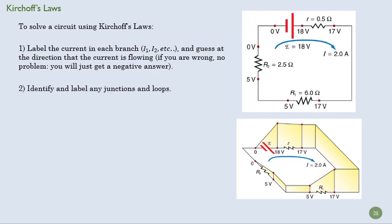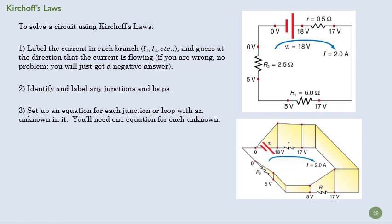You label the current branch. You identify and label any junctions and loops. And then you set up an equation for each junction and each loop with a known in it. Your goal is to find as many different equations as you have unknowns. If I have three unknowns, I don't know the current in three loops or three branches, then you're going to need three equations to solve that.